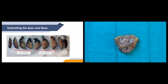This image shows how we submit the apex and base with mirrored images, the central line being the urethra we cut through. We submit the right half going from midline to lateral, then the left half going again from midline to lateral.